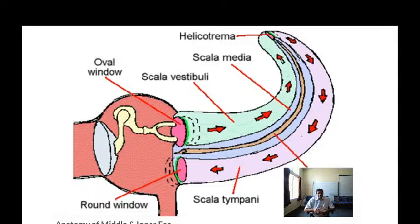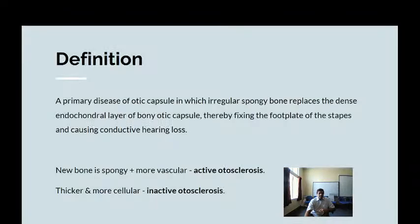We are discussing the basic mechanism because today's condition, otosclerosis, is a condition where there is some kind of obstruction to the vibrations — sound vibrations are being stopped from being sent into the scala vestibuli. Going into the definition: otosclerosis is a primary disease of the otic capsule in which irregular spongy bone replaces the dense endochondral layer of the otic capsule, thereby fixing the foot plate of the stapes and causing conductive hearing loss.